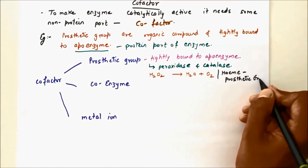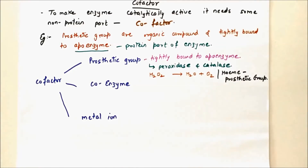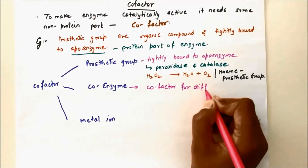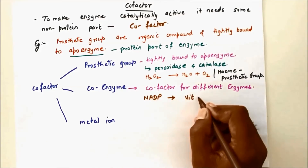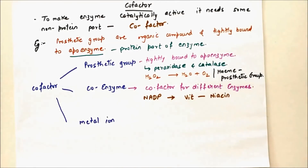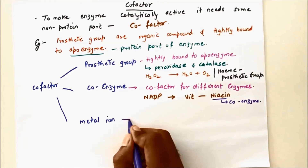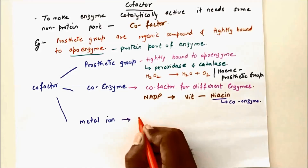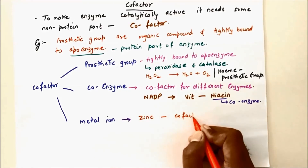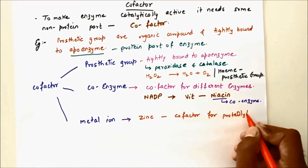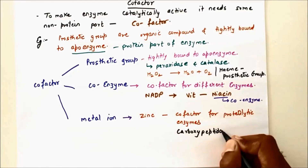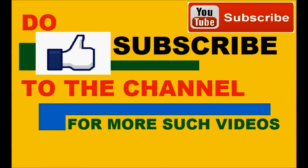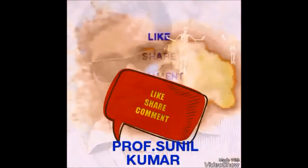Prosthetic groups are tightly bound to the apoenzyme. For example, peroxidase and catalase catalyze the breakdown of H₂O₂ into H₂O and O₂, and heme is the prosthetic group for this reaction. Coenzymes like NAD and NADP (niacin) act as coenzymes. Metal ions such as zinc act as cofactors for all proteolytic enzymes. An example of this is carboxypeptidase.